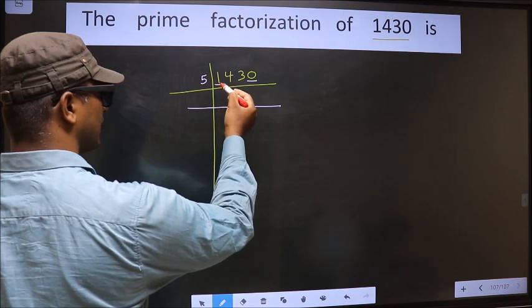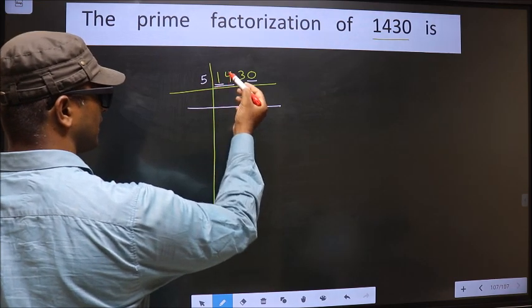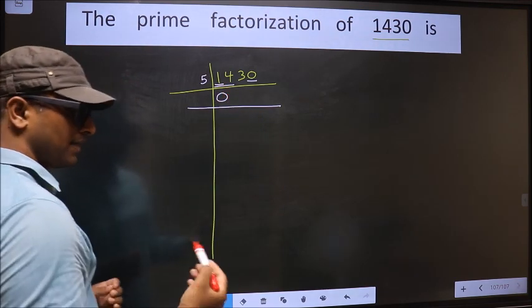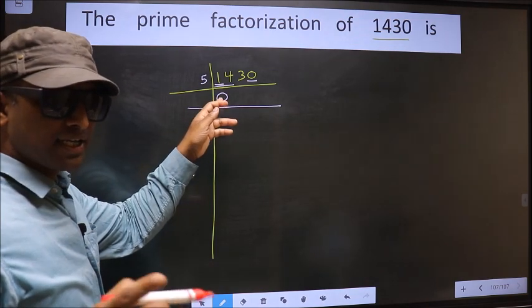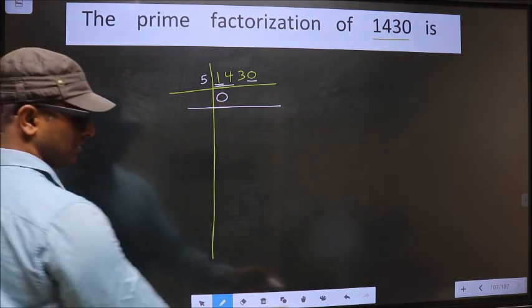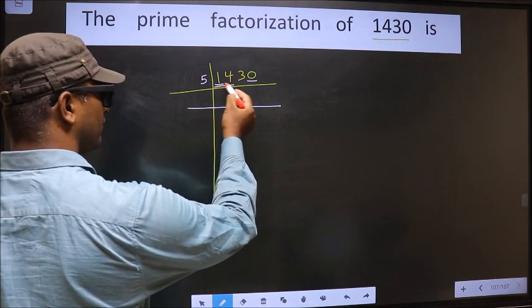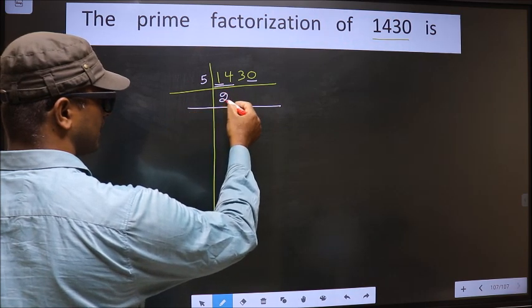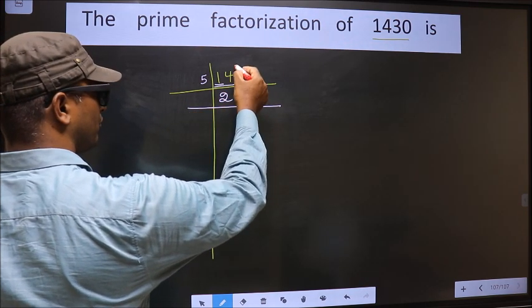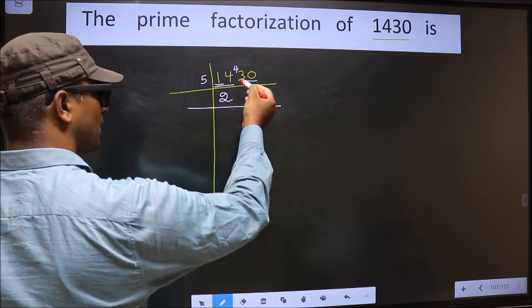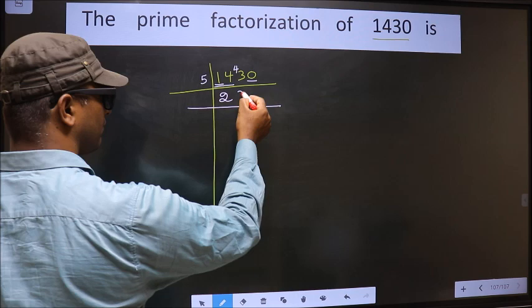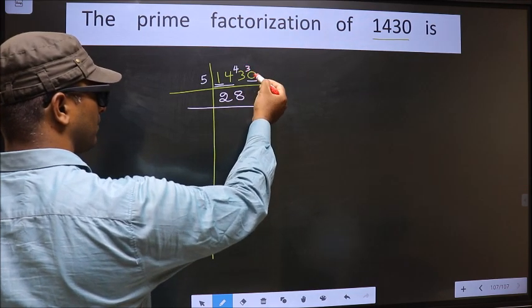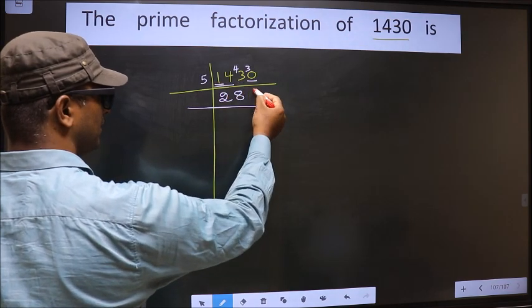The first number is 1, 1 smaller than 5, so we take 2 numbers, that is 14. Whenever we are taking 2 numbers compulsory, we should put 0. But 0 at the start does not count, so no need to write 0 at the start. So here we have 14. When do we get a number close to 14 in 5 table? 5 times 2 is 10. 14 minus 10 is 4, 4 carried forward making it 43. A number close to 43 in 5 table is 5 times 8 is 40. 43 minus 40 is 3, 3 carried forward making it 30. When do we get 30 in 5 table? 5 times 6 is 30.